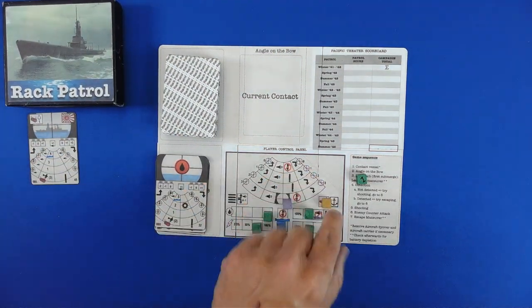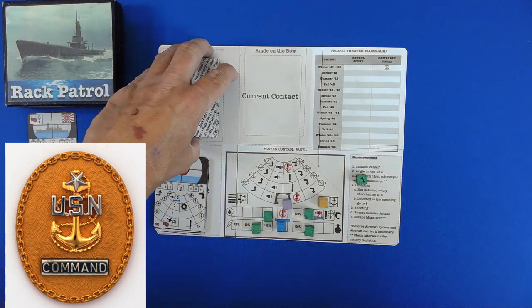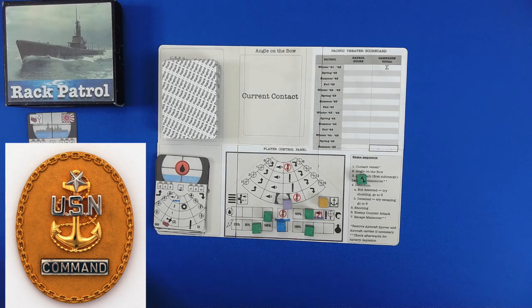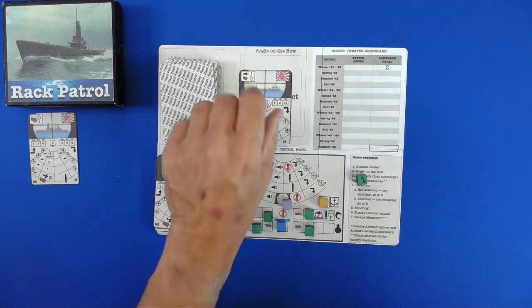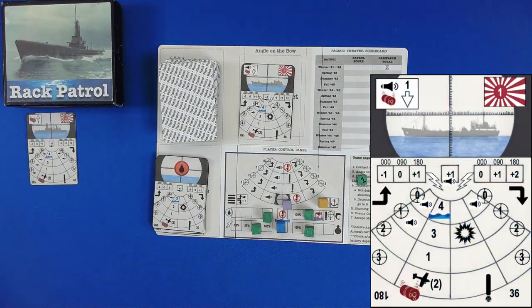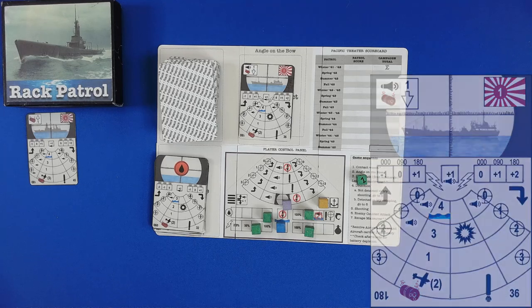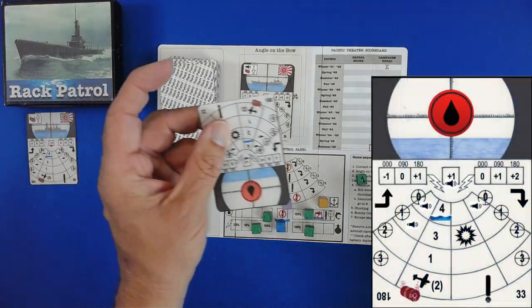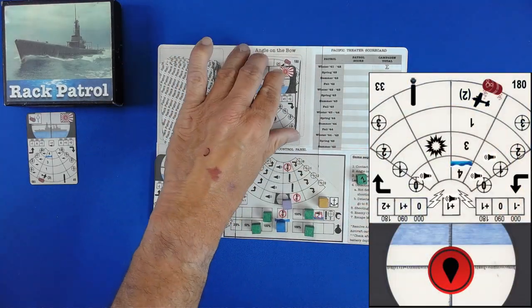We switch over to the chief of the boat. For those of you who don't know, the chief of the cob or the chief of the boat is the highest enlisted person for military people. That's an E9. And we run across another ship. This is a supply ship. Good news, we're going after him. How are they coming on the angle on the bow? We flip over 180. That means they are going away from us.